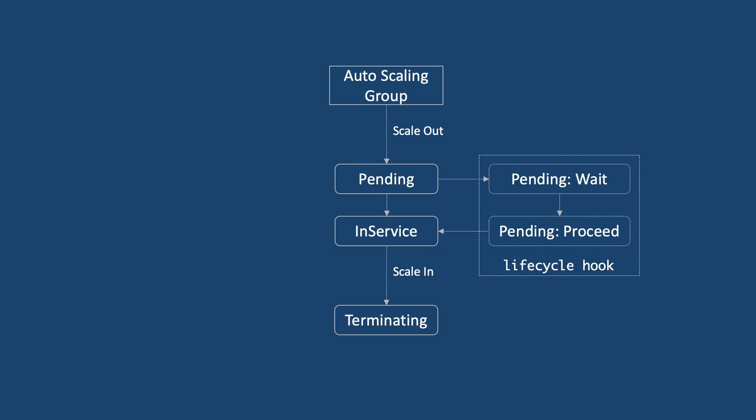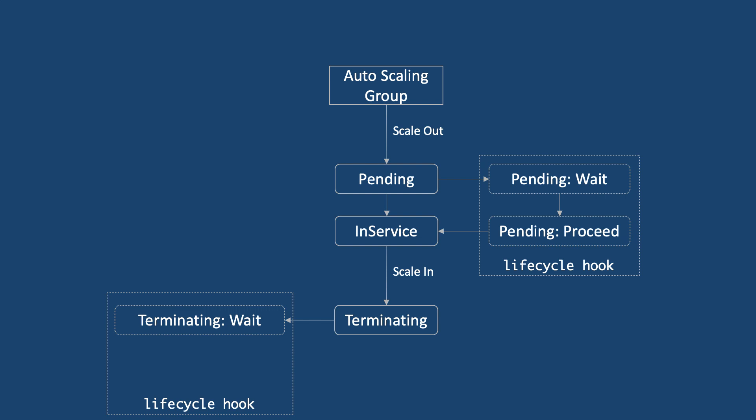When a scale in event happens, the instance first moves to the terminating state, and at this point it is intercepted by the lifecycle hook. The lifecycle hook puts the instance into a terminating wait state. At this stage, we can take some custom actions like backing up the logs. When the custom action has been completed, we instruct the instance to move to a terminating proceed state, and then the instance will be terminated.